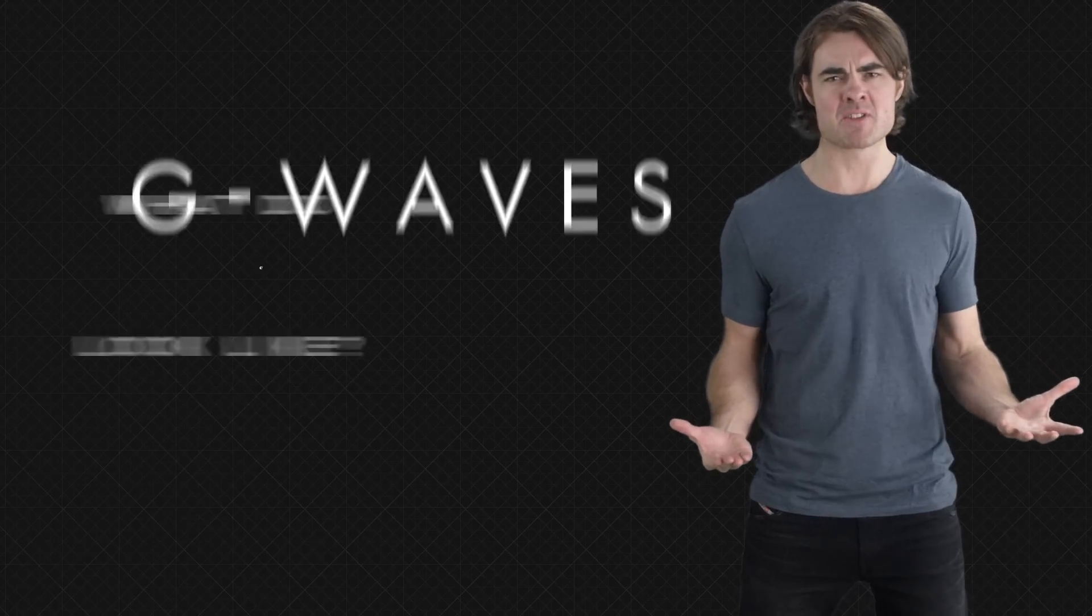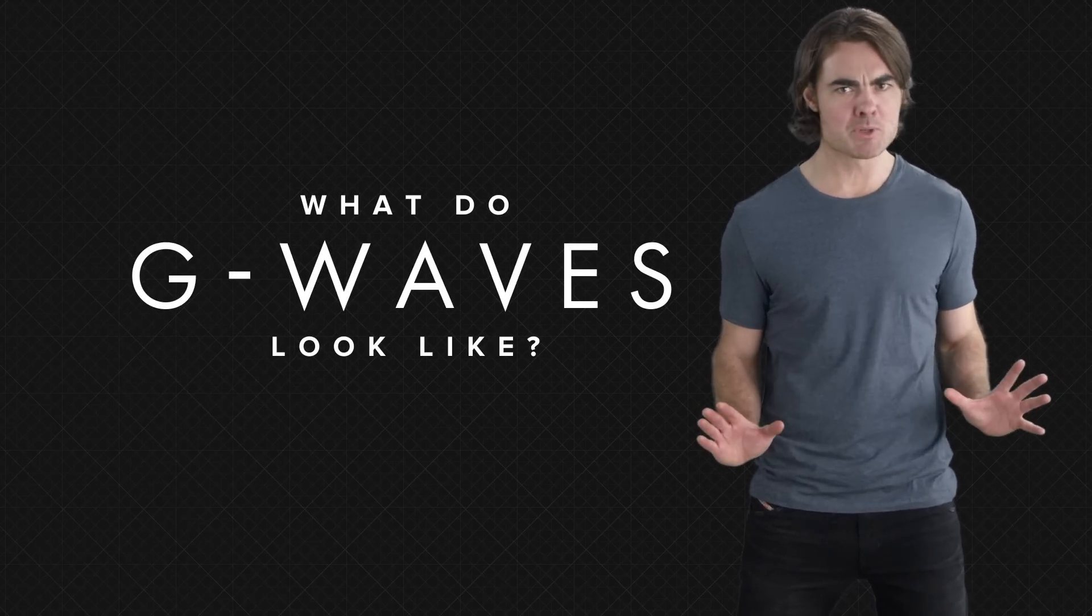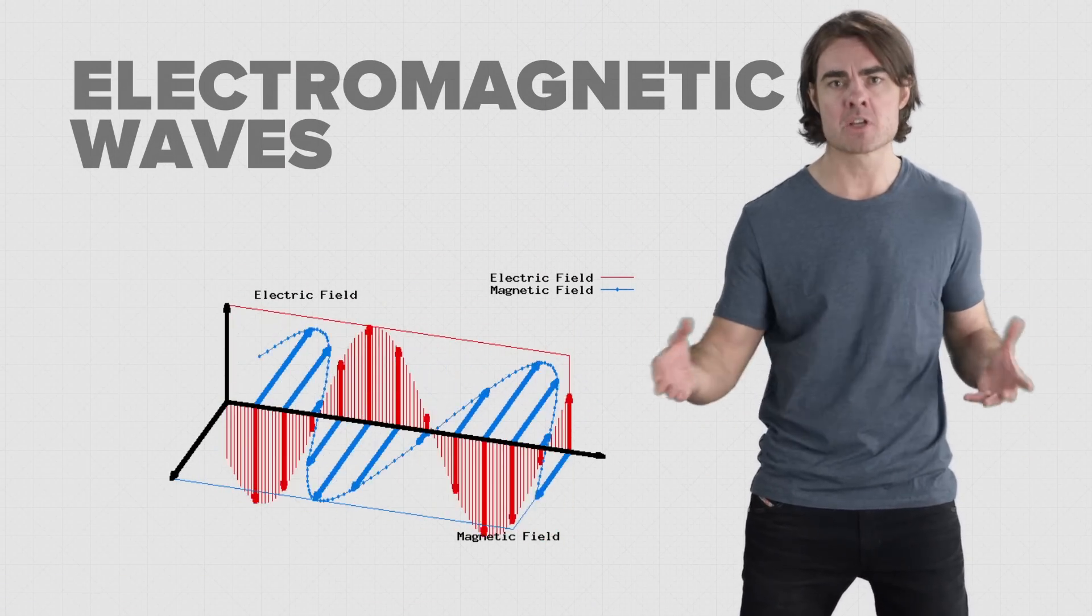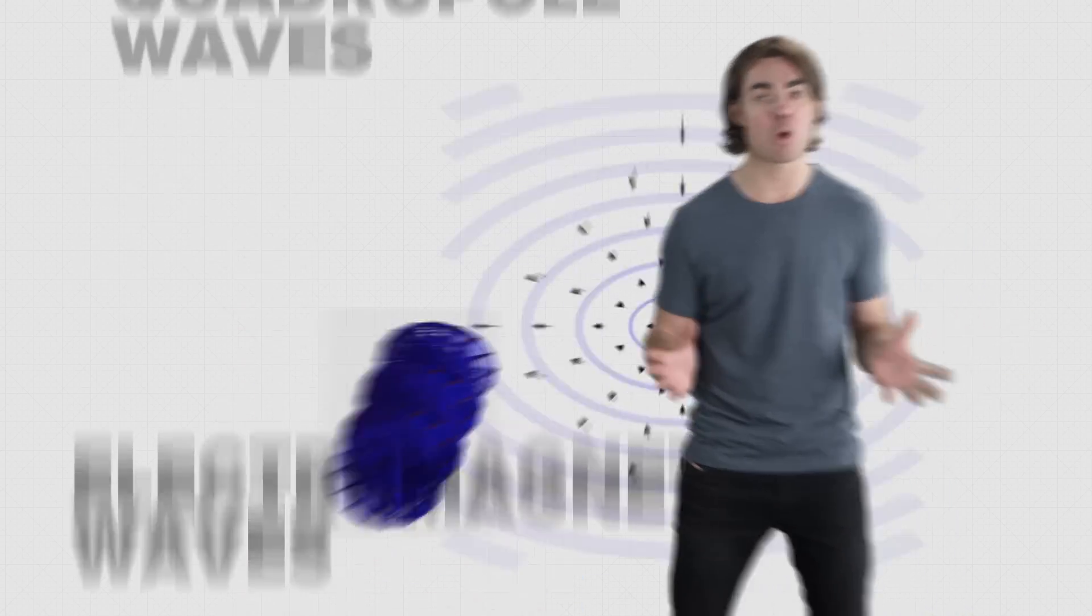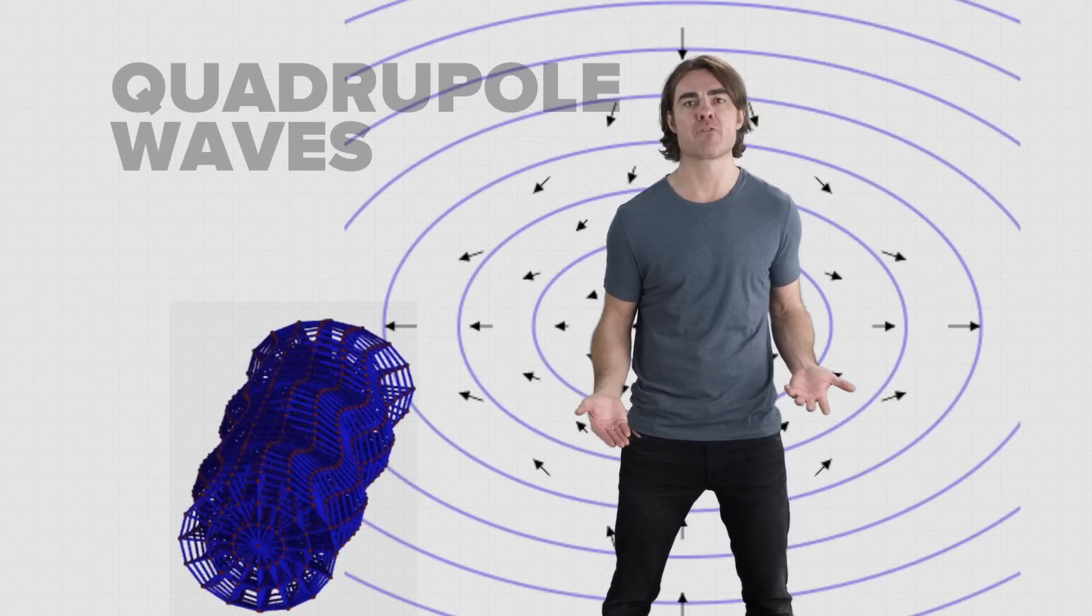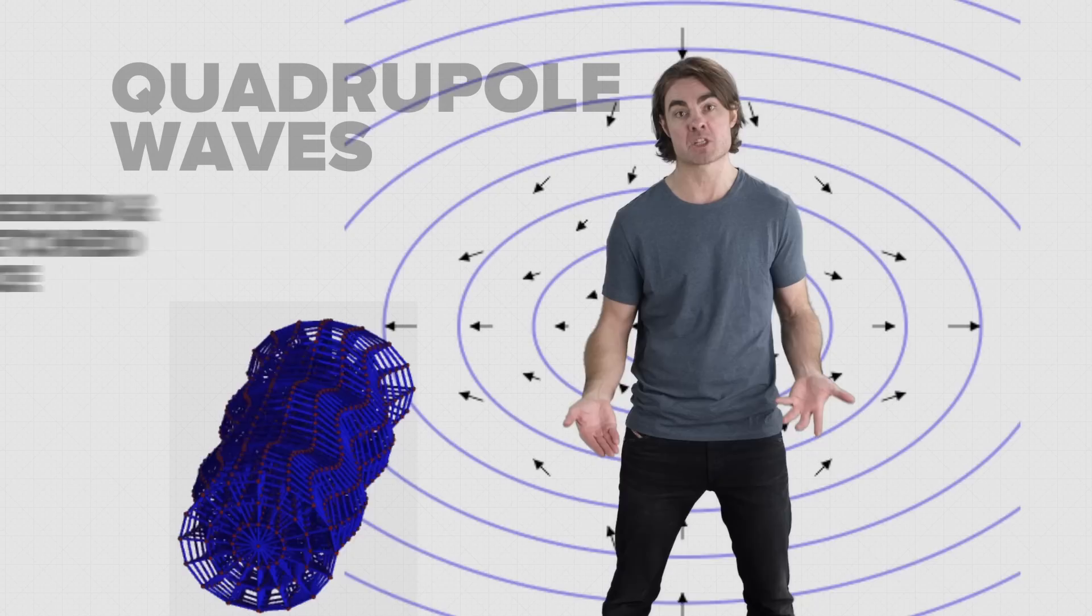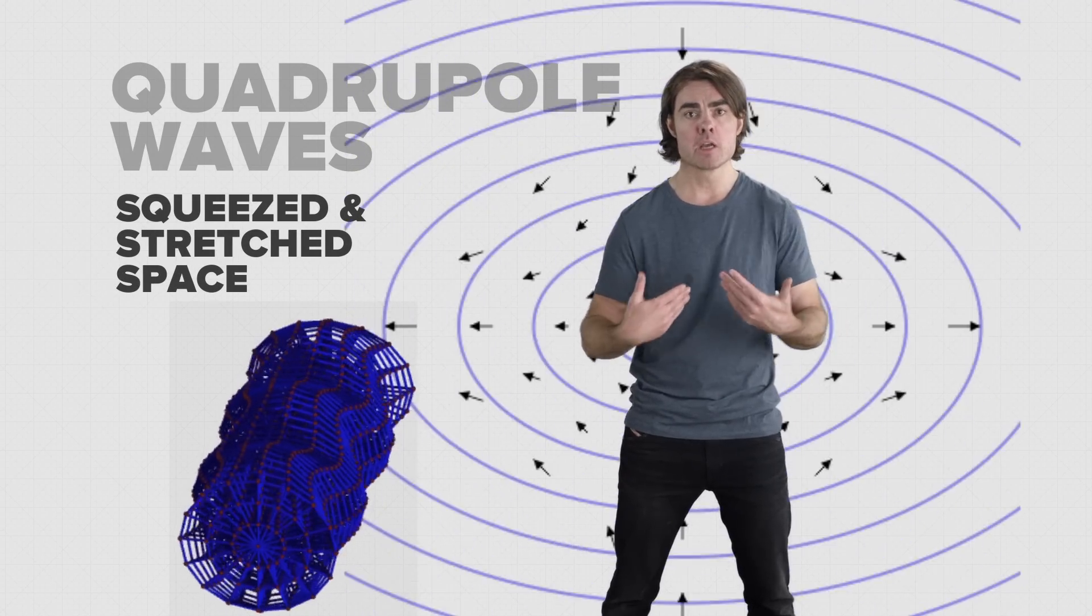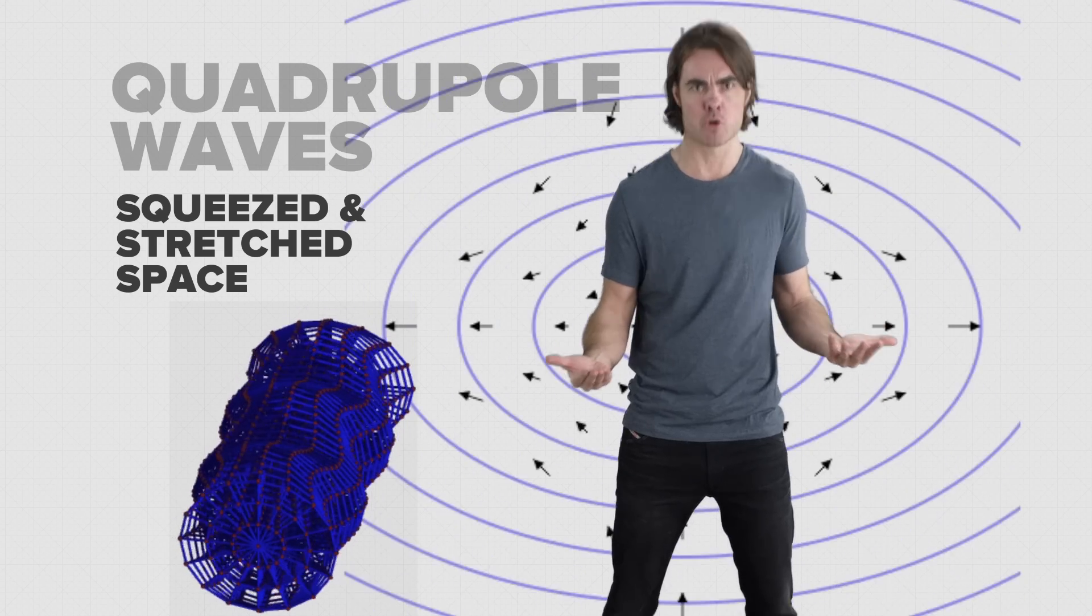So what on earth do G waves even look like? Unlike ripples on a pond, or even electromagnetic waves, which are all simple up-down longitudinal waves, gravitational waves are what we call quadrupole waves. They propagate as a fluctuation of squeezed and stretched space in a sort of cross-like pattern. If one passed through your body, you'd become taller and thinner, then shorter and fatter, then taller and thinner, et cetera, until it passed by.